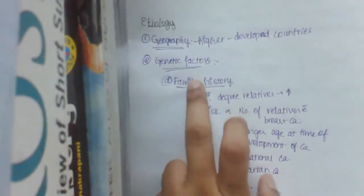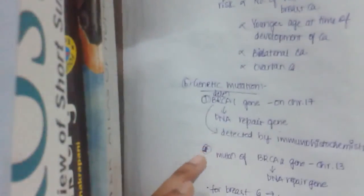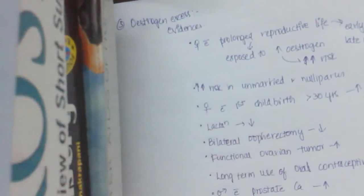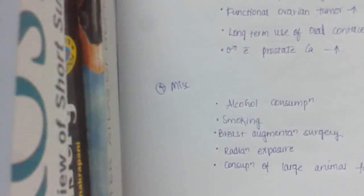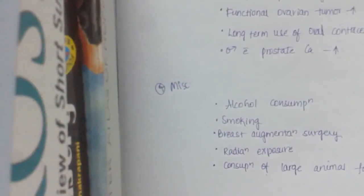So these basically include first geographical factors, genetic factors, which includes family history and genetic mutations. And it also includes estrogen excess with some evidences and miscellaneous factors. In our next class, we would deal about the pathogenesis of breast cancer and the classification. Okay, then bye.